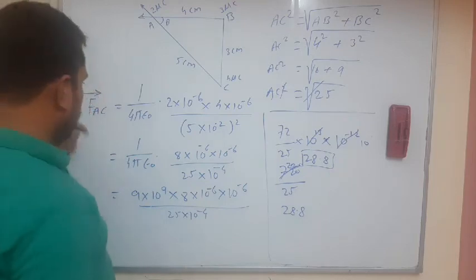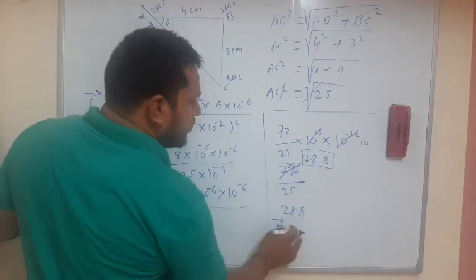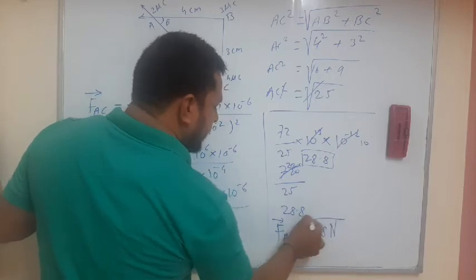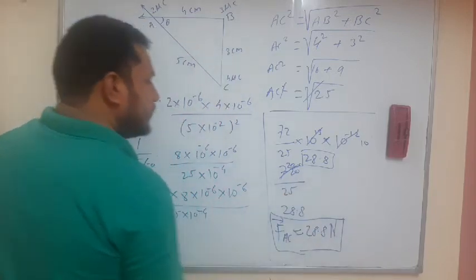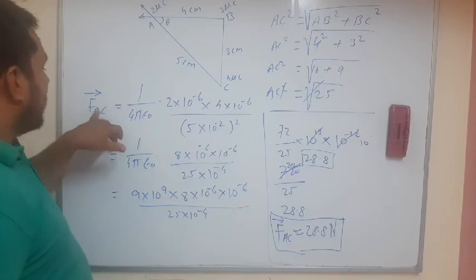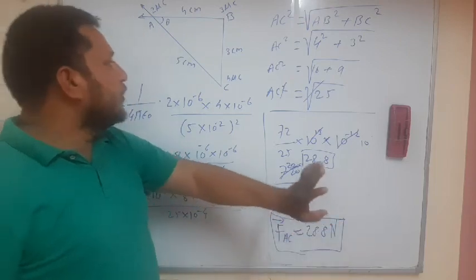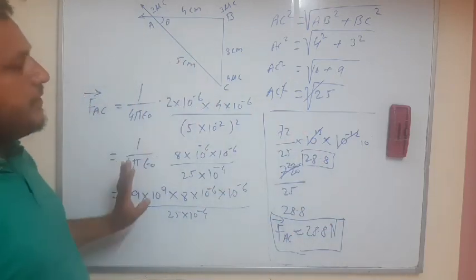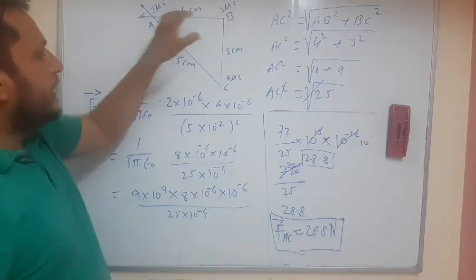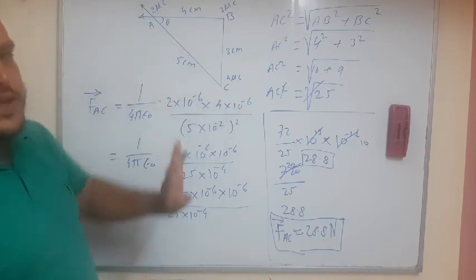So continue with this equation. That is what? Vector F A due to C is equals to what? Is equals to 28.8 Newton. This is our required value. So we can say here, force vector F A due to C along AC is what? 28.8 Newton. It is very simple. In our previous equation we have seen here the force at A due to B. In this, this numerical gives us the force at A due to C.